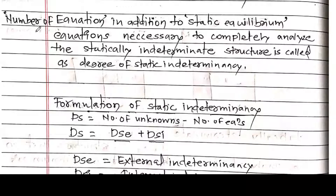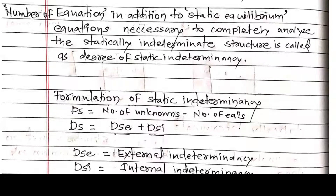Again, the definition of degree of static indeterminacy: the number of equations in addition to static equilibrium equations required to completely analyze the statically indeterminate structure. In simplified formula: DS = number of unknowns minus number of equations available. This is the general equation.